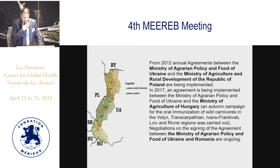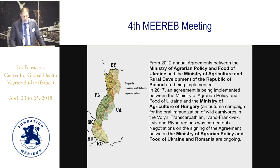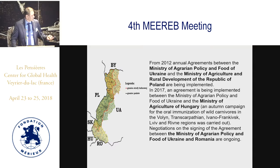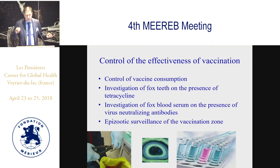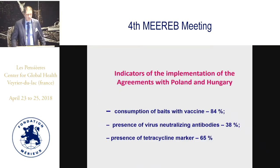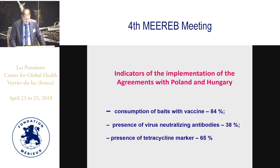We have a buffer zone vaccination strategy and agreements between our Ministry of Agriculture and Poland and Hungary. I hope this year we will also sign an agreement with Romania. The criteria for controlling vaccination results — according to the agreements between Ukraine, Poland, and Hungary — show: bait consumption was 84%, neutralizing antibodies were found in 38% of foxes, and tetracycline biomarker was detected in 65% of animals.